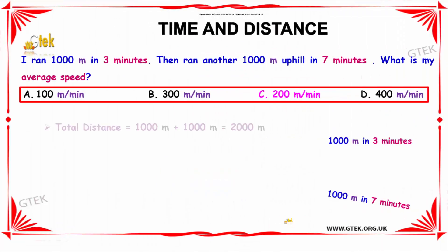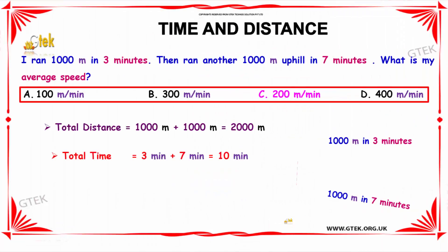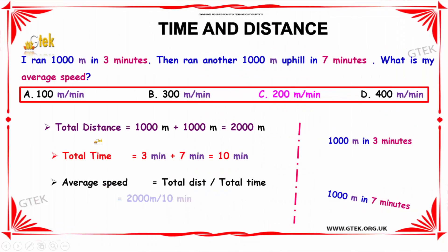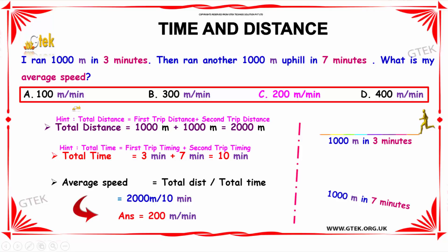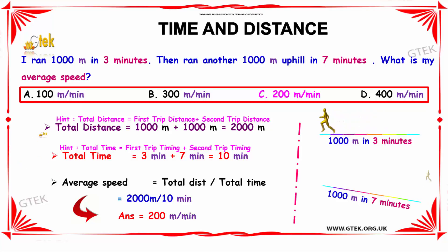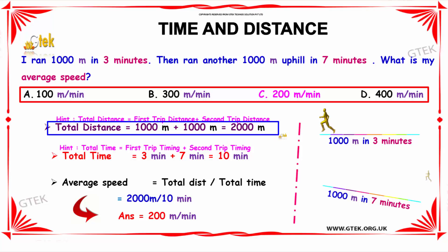The solution for this problem is: the total distance equals the first trip distance plus the second trip distance, which gives us 1000 meters plus 1000 meters, which is equal to 2000 meters.